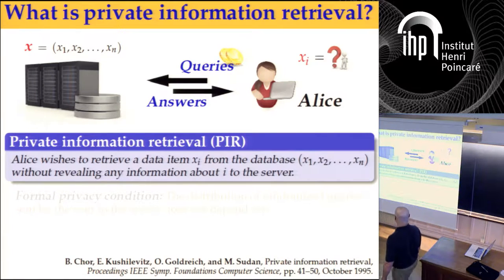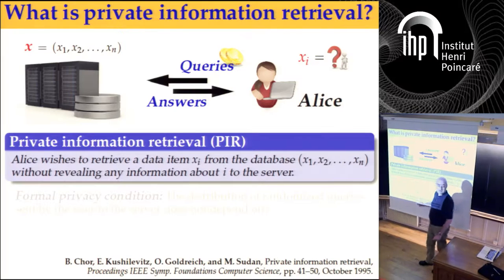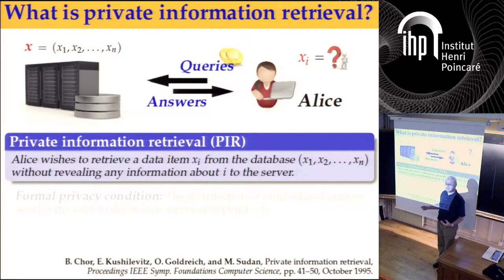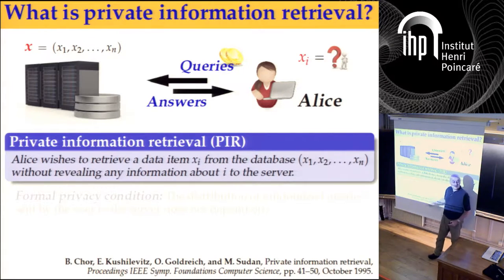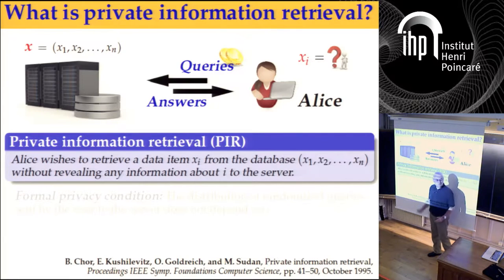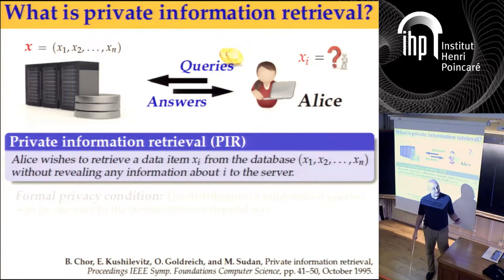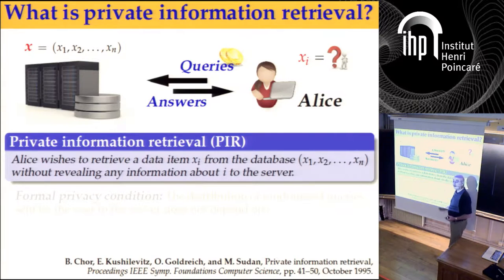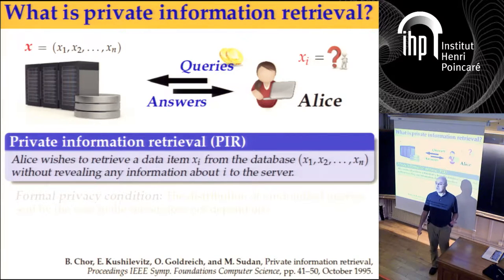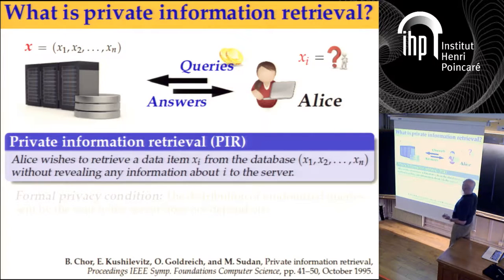We have a database which stores some information, and we model this as one long string, which could be binary or non-binary. In this talk, we'll assume the binary model. And there is a user, and the user wants one item from this database, x sub i.